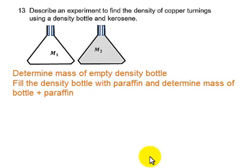From these two measurements, we can determine the mass of the kerosene that fills the density bottle. And if we know the density of kerosene, we can find the volume of the kerosene which fills the bottle. By finding the volume of kerosene that fills the bottle, we will be finding the internal volume of the density bottle itself — that is the main aim here.